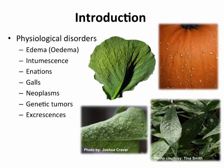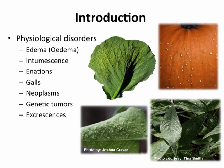As many of you have certainly heard, there are multiple different physiological disorders out there. The first two on this list, edema and intumescence, you're probably certainly aware of. Those will be what myself and Dr. Williams talk about today based on research we've done in recent years. However, there are many other types of physiological disorders, including enations, galls, neoplasms, including genetic tumors and excrescences. We find these physiological disorders across many different plant species and plant families — it's not targeted to one narrow range of plants.